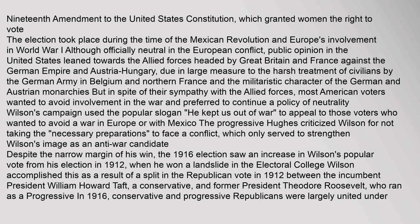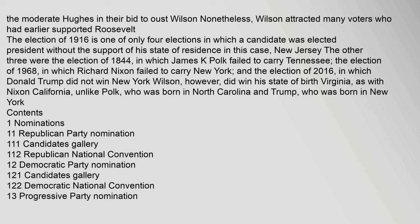The moderate Hughes united conservative and progressive Republicans in their bid to oust Wilson; nonetheless, Wilson attracted many voters who had earlier supported Roosevelt. The election of 1916 was one of only four elections in which a candidate was elected president without the support of his state of residence — in this case, New Jersey. The other three were the elections of 1844 (Polk/Tennessee), 1968 (Nixon/New York), and 2016 (Trump/New York). Wilson, however, did win his state of birth, Virginia, as did Nixon with California, unlike Polk and Trump.